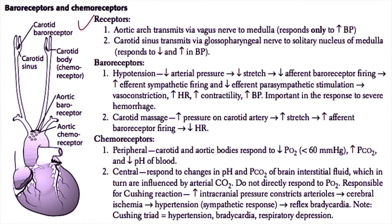Some of the mechanisms by which the body responds to increased or decreased blood pressure are shown here. The receptors include the aortic arch and the carotid sinus baroreceptors. The aortic arch baroreceptors transmit information via the vagus nerve to the medulla and respond only to increased blood pressure. Carotid sinus baroreceptors transmit information via the glossopharyngeal nerve, or cranial nerve 9, to the nucleus of the solitary tract of the medulla.